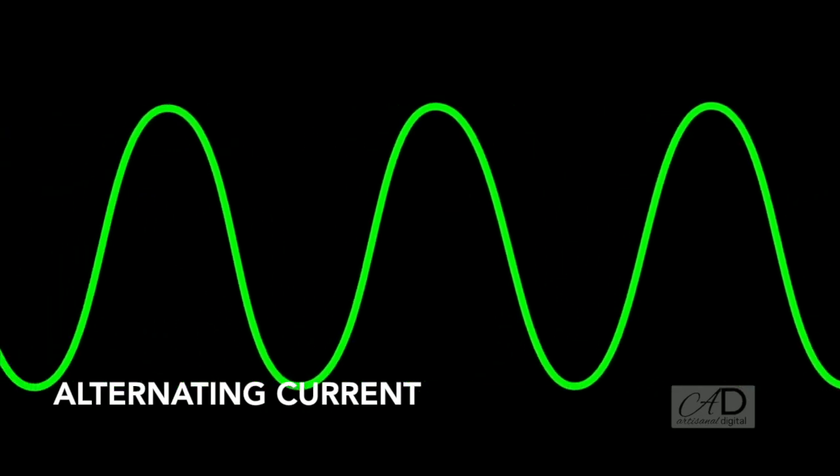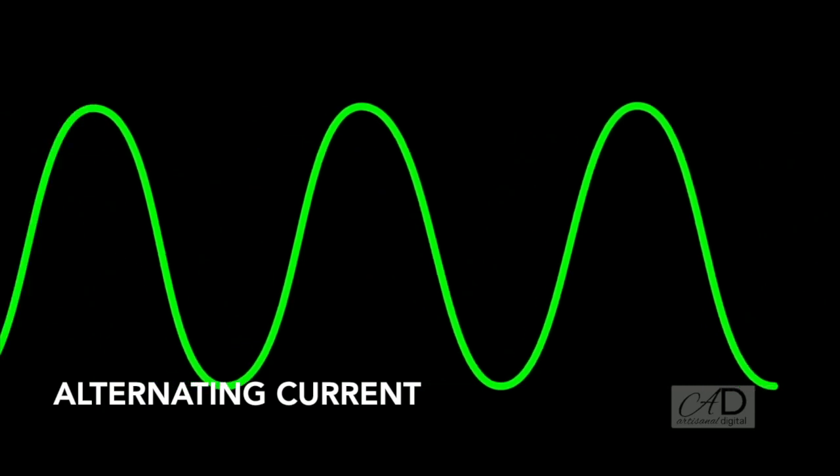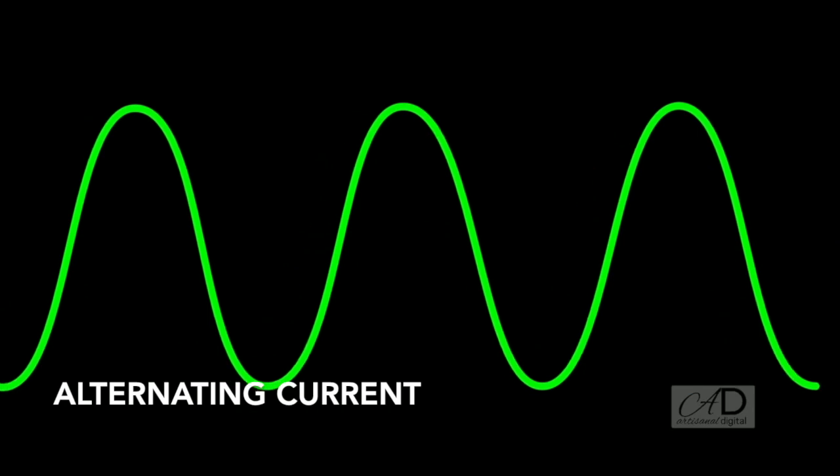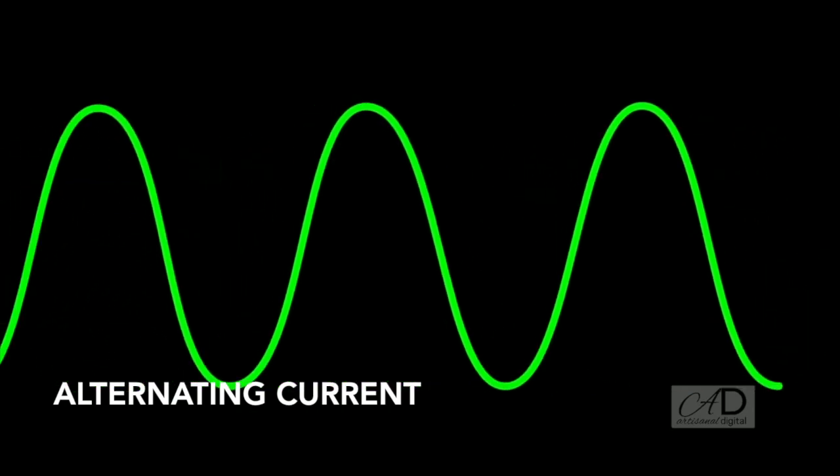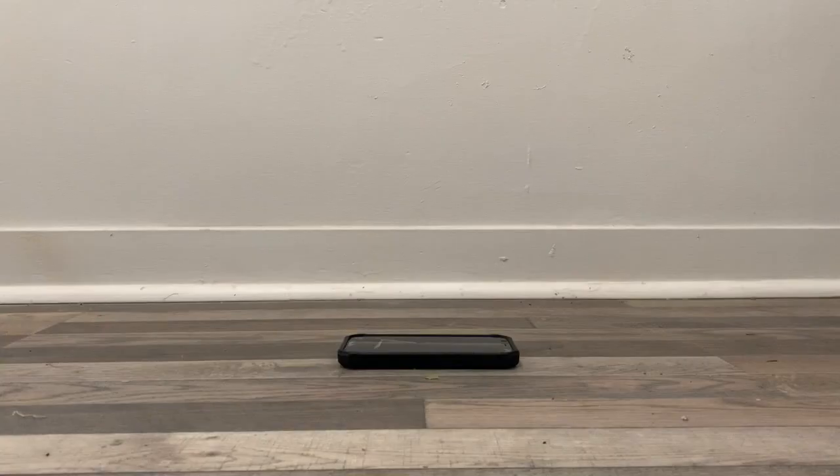But what comes out of your wall is alternating current, or AC, and it doesn't work that way. If direct current is a steady flow of electrons, then alternating current alternates between providing a little bit of current and a lot of current. To your cell phone, that feels like taking a whole bunch of electrons at once.